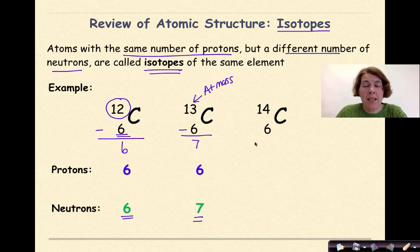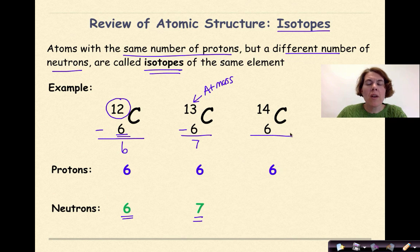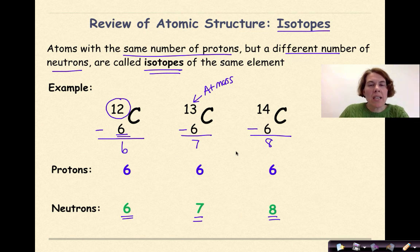So now for my last example. Again, I'm going to have 6 protons, as I can see right here. My atomic mass is 14, so 14 minus 6 is 8. Therefore, I have 8 neutrons. I recognize these as isotopes, because they all have the exact same symbol, and they all have the exact same number of protons. Remember, the number of protons will determine the identity of the element. What is different here is the number of neutrons. So for the first it was 6, the second it was 7, and the last one it was 8.